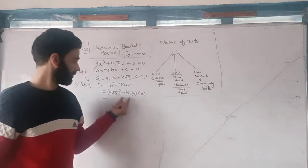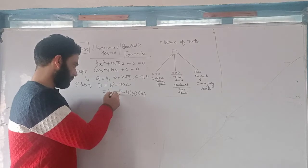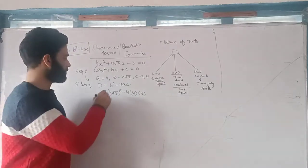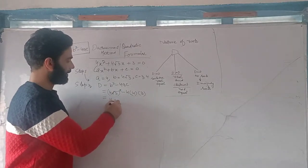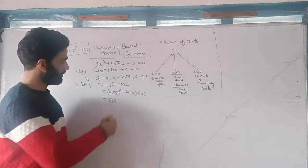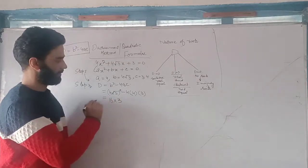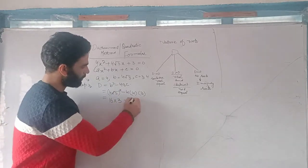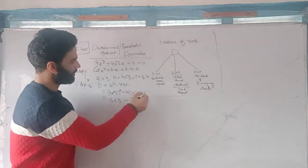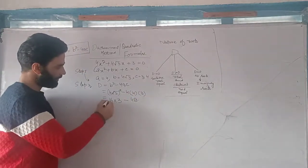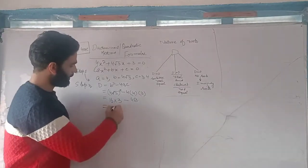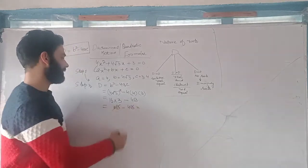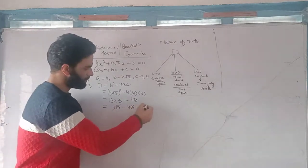Now I will solve this. The square and the square root will cancel each other. That means 4 squared is 16, and the square root of 3 cancels, leaving 3. So we have 16 into 3, minus 4 into 4 into 3. That gives us 48 minus 48, which equals 0. So my discriminant comes out to 0.